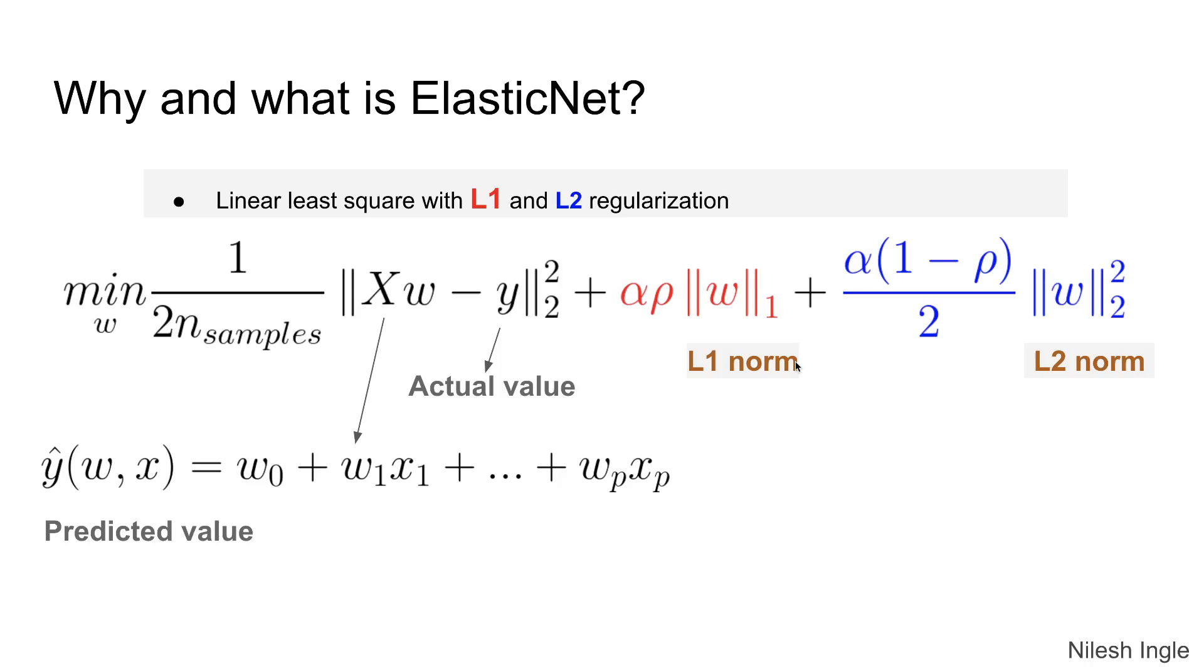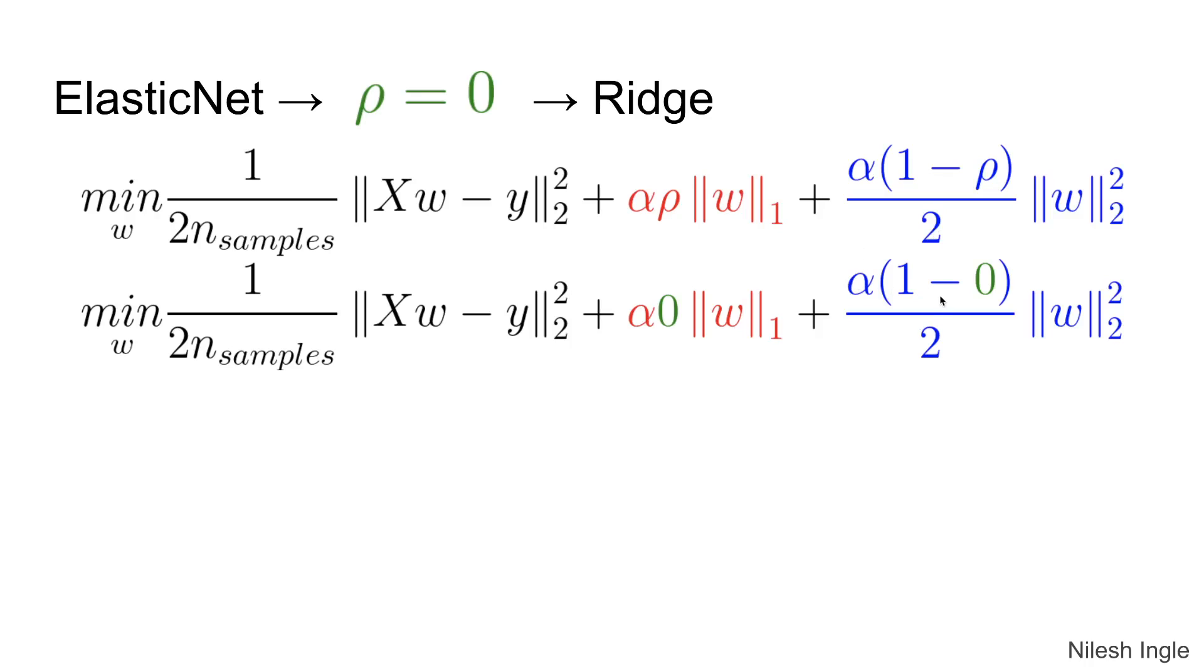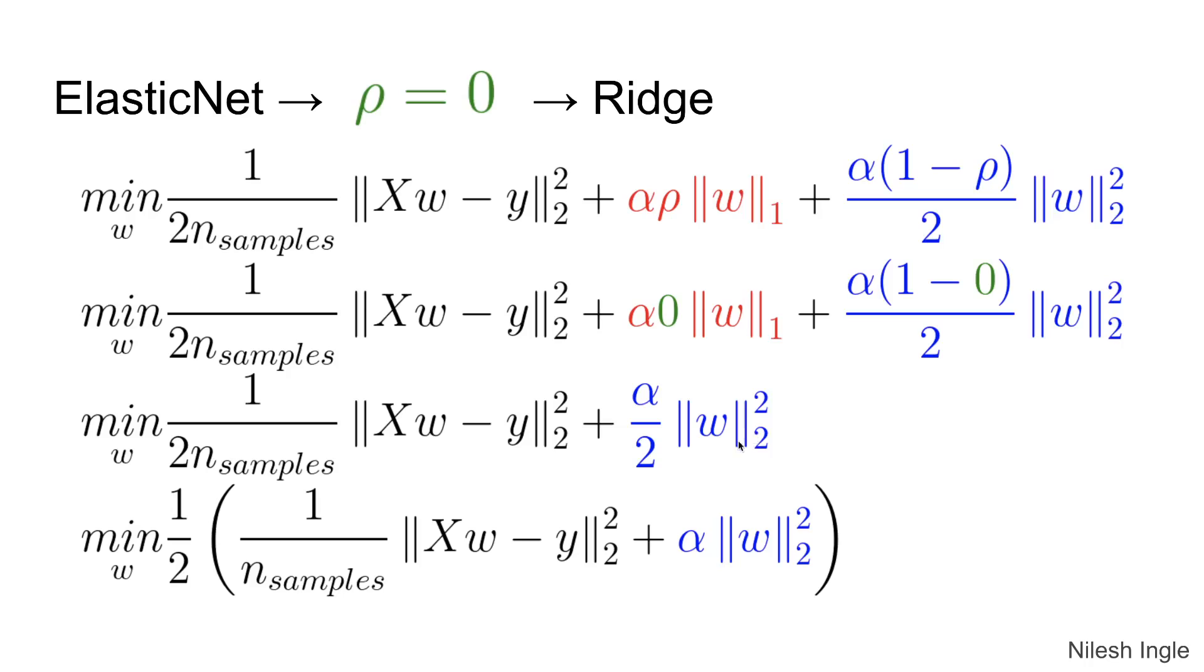And we can move the model either towards L1 norm or L2 norm depending on the value for rho. So if we set the value of rho here to zero as shown in this figure, we can see that this term will become one and this term will go away. And so we are left with just the L2 norm that is for ridge, and thus this objective function would then become similar to what we had seen previously which is ridge regression except for this term here which is 1 divided by 2n_samples.